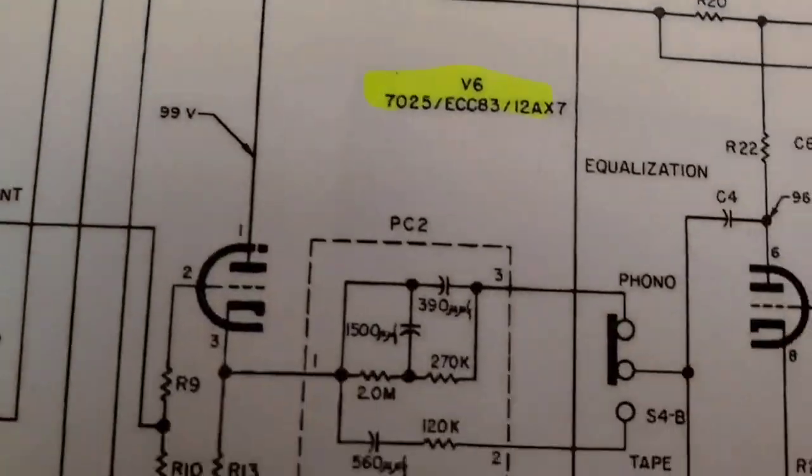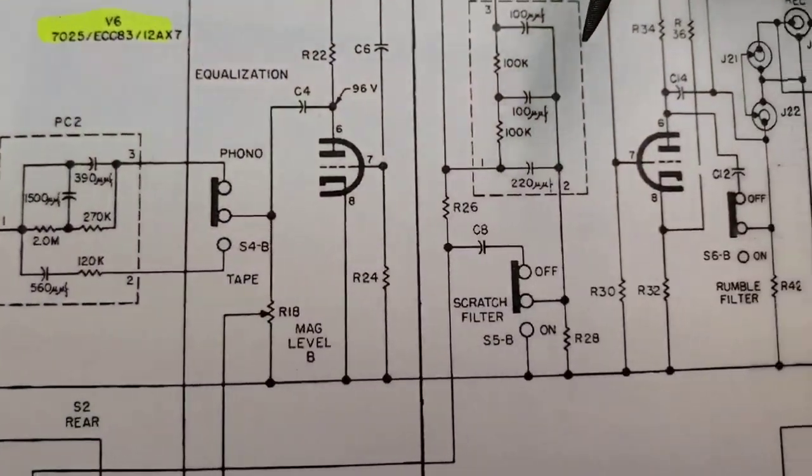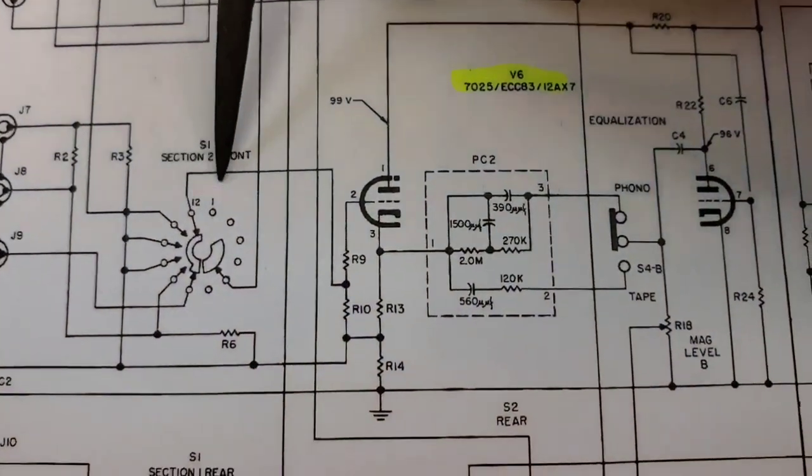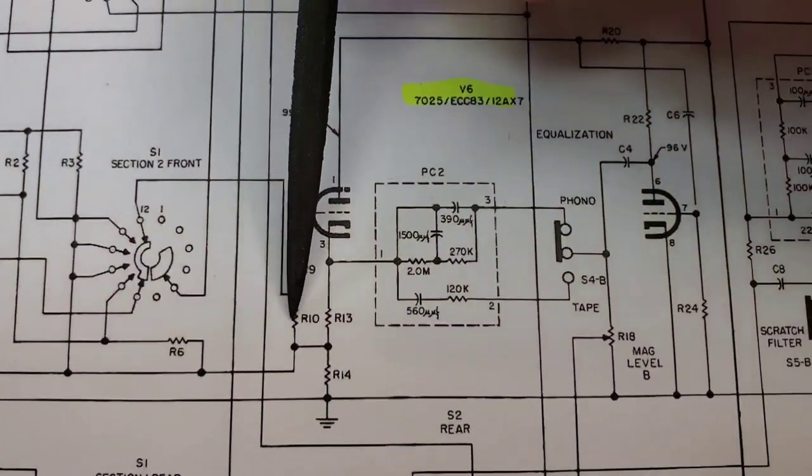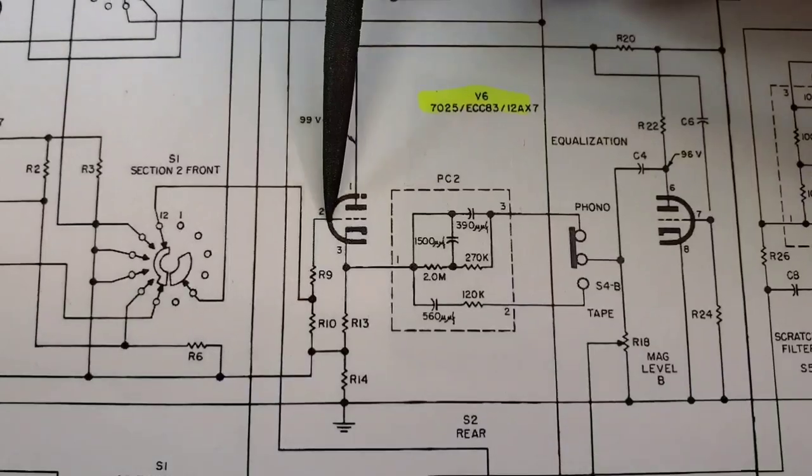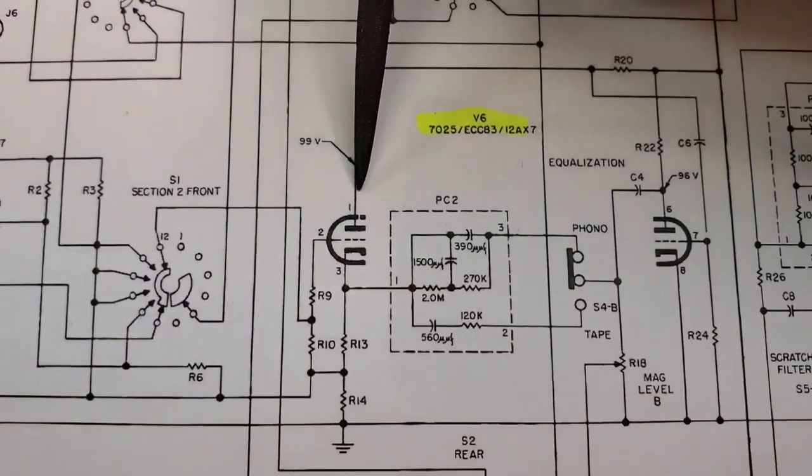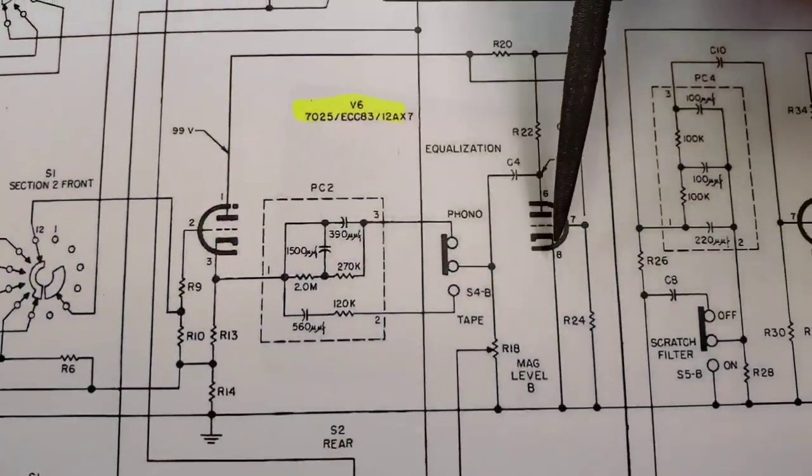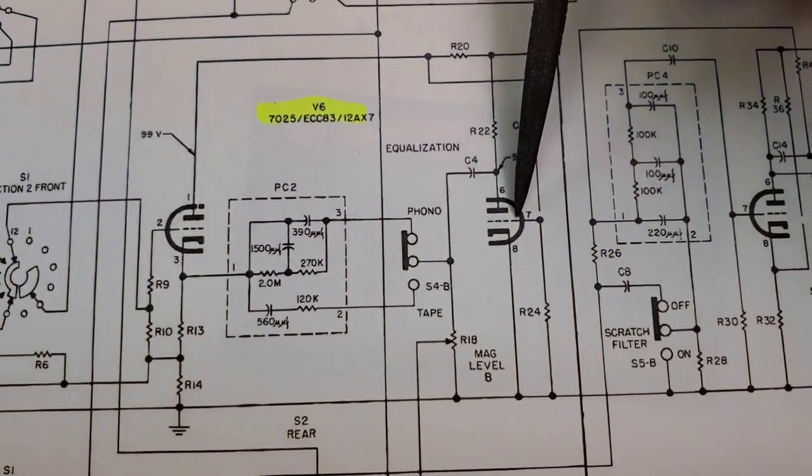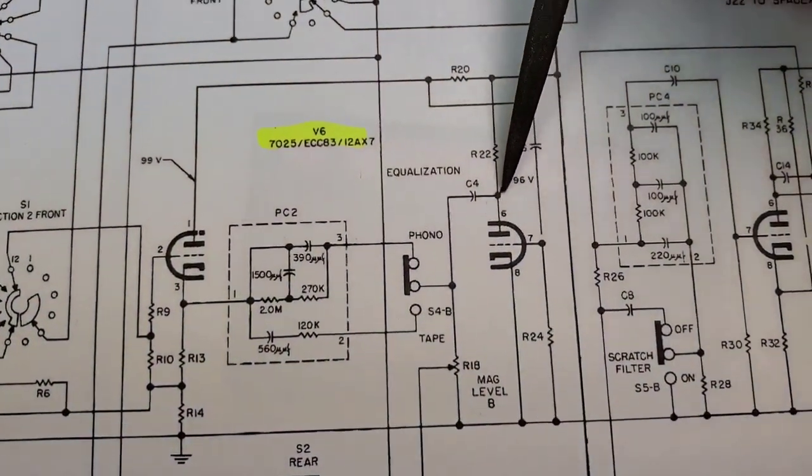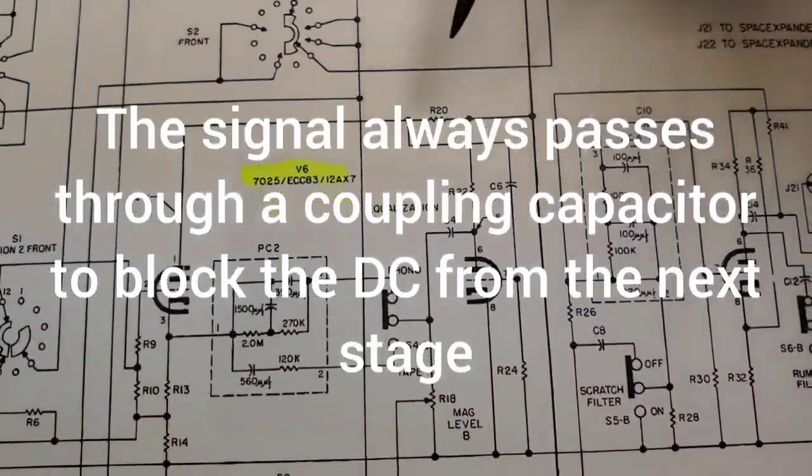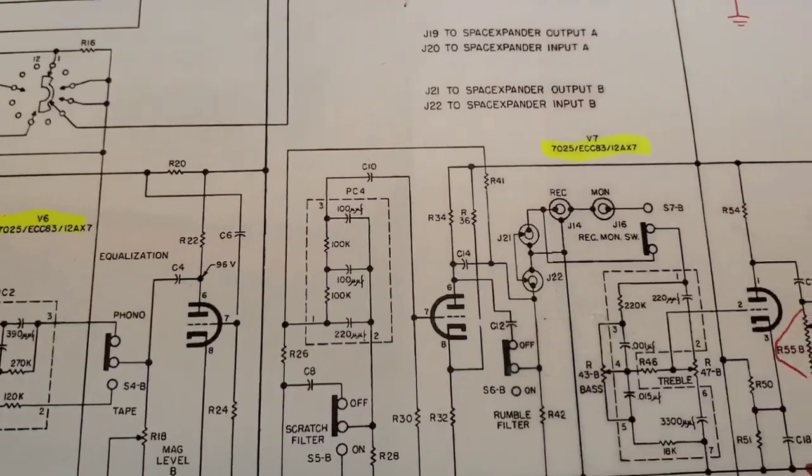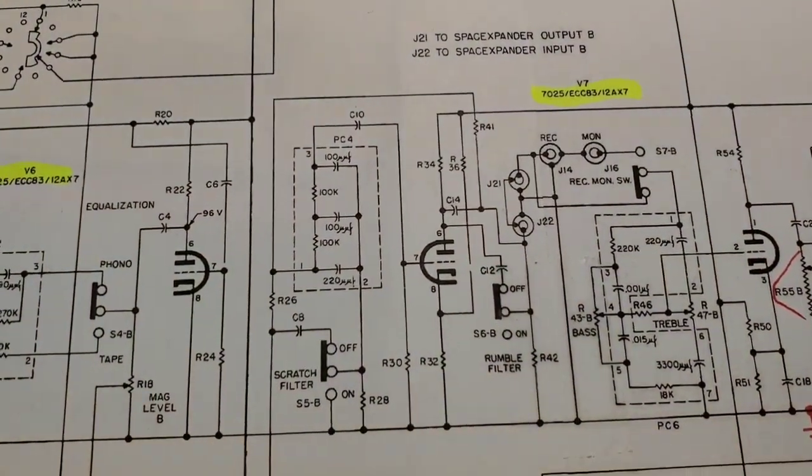And normally, the signal flows into the tube grid. Let's find an input here. Yeah, right there. See, it's coming from the selector switch through dropping resistance. This is into the grid. And this is the output. Right there. And that's half of the tube. Here's the other half of the tube. There's the input. There's the output. And they work in tandem. And that's how the amplifier works.